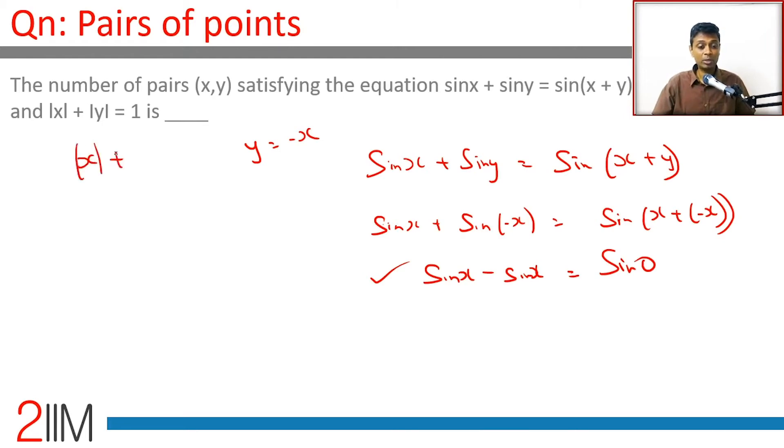If you put that, then |x| + |-x| = 1, which means |x| = 1/2. Since |-x| = |x|, x could be 1/2 and y could be -1/2, or x could be -1/2 and y could be 1/2. Those two pairs work.